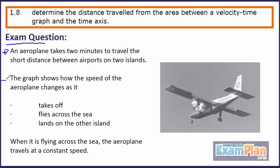The graph shows how the speed of the aeroplane changes as it takes off, flies across the sea and lands on the other island. When it is flying across the sea, the aeroplane travels at a constant speed.